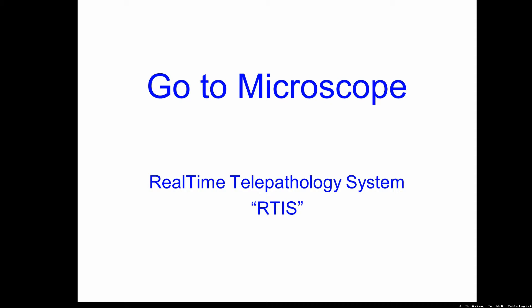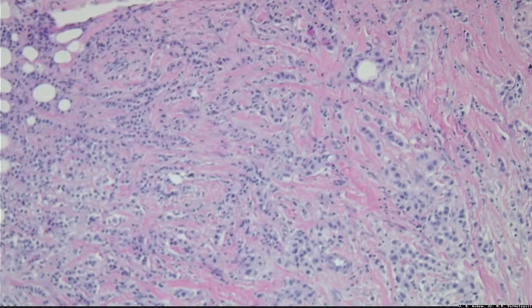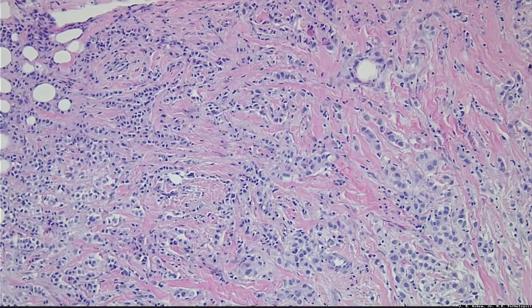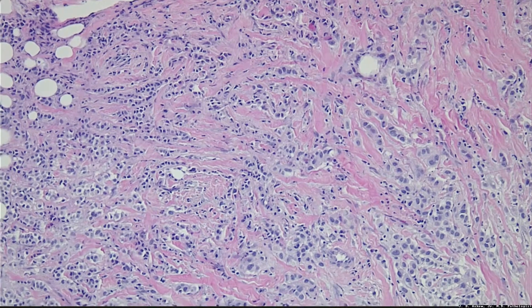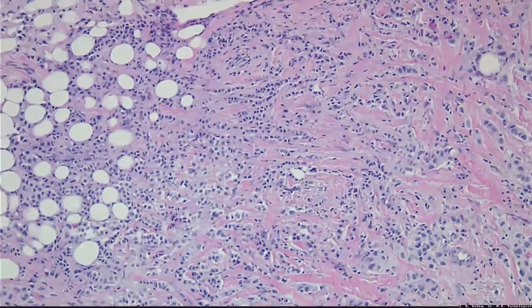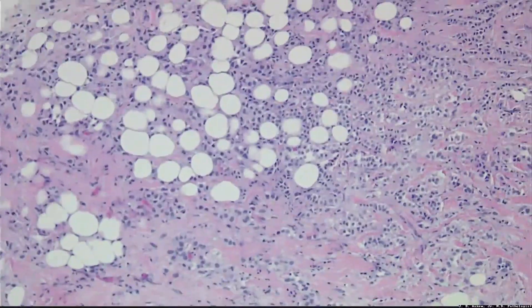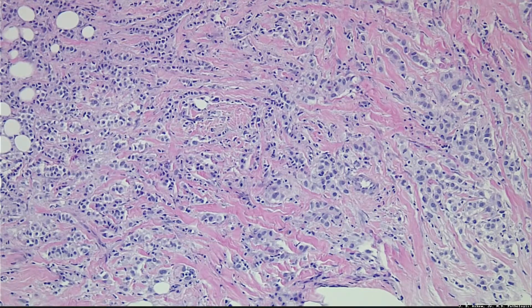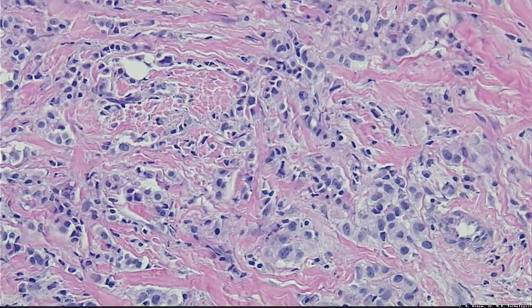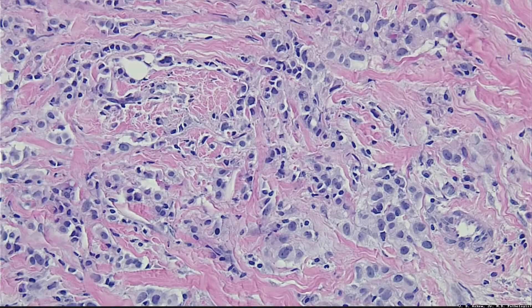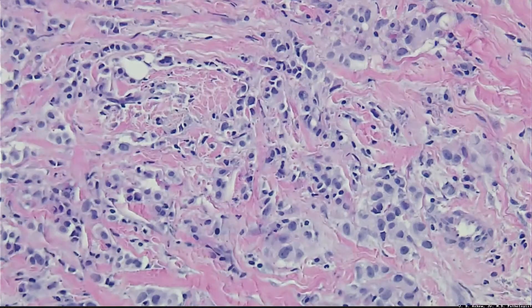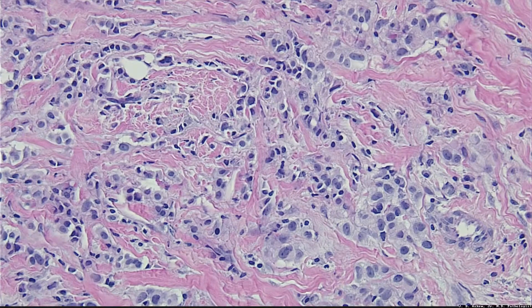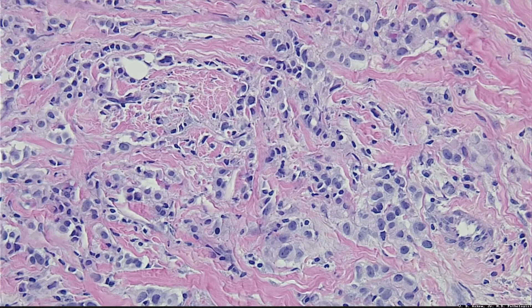Now we go to the microscope using the RTIS system. What we're looking at in focus is infiltrating carcinoma of the breast, and this is real-time HD video. We carefully move the slide around to demonstrate the tumor growing in fibrous tissue and between fat. At 200x, the image is nicely in focus, demonstrating nuclear detail, which is important to the pathologist. I'm also focusing up and down, which pathologists like to do when looking at cell detail.